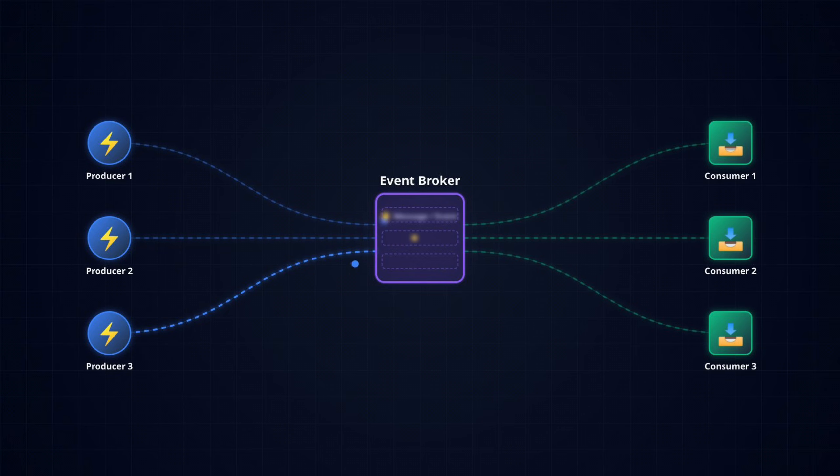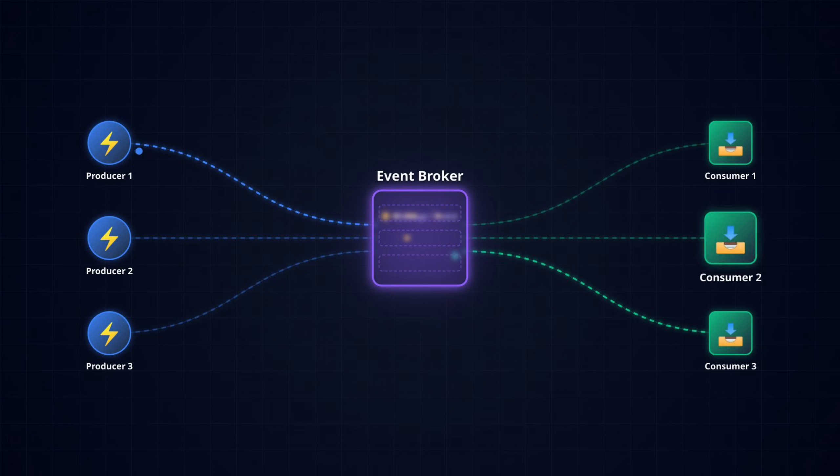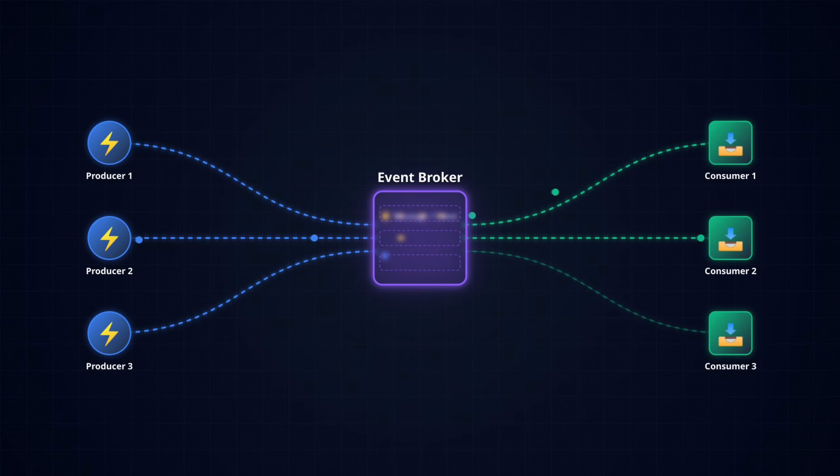The second part of the three-part pattern is the broker. This is usually a system that receives, stores, and delivers events. Some common examples are Kafka, Kinesis, SNS, or even RabbitMQ. The broker is what allows you to decouple everything. Because of this, producers don't have to know how many consumers there are, exactly who those consumers are, or what the consumers are going to do with the data. All they need to do is publish the event. The broker can handle things like buffering, ordering, retries, fanout, and even dead lettering in certain cases. The broker is the heart of an event-driven architecture, which makes everything work seamlessly.